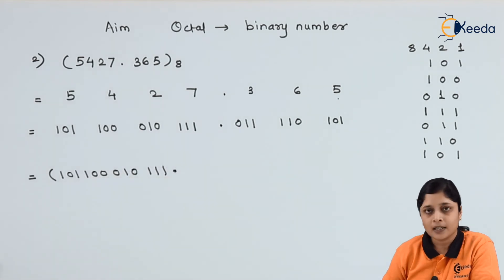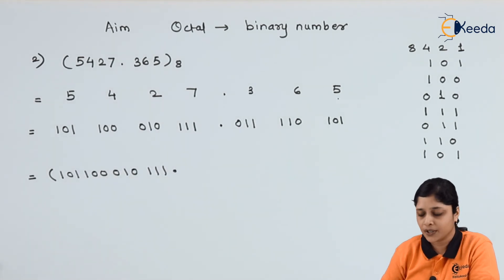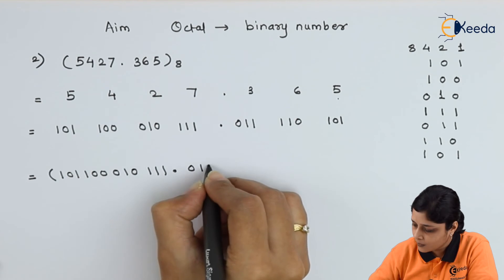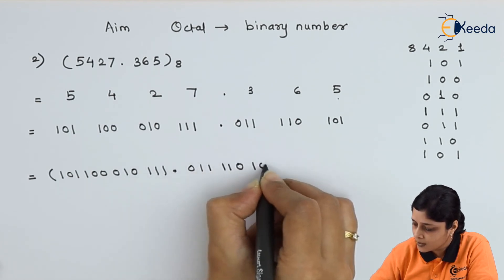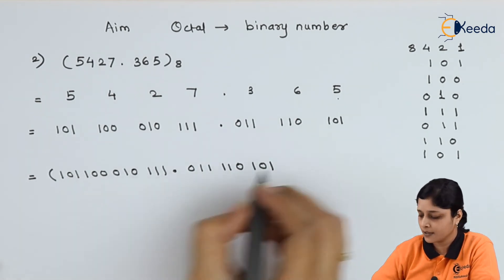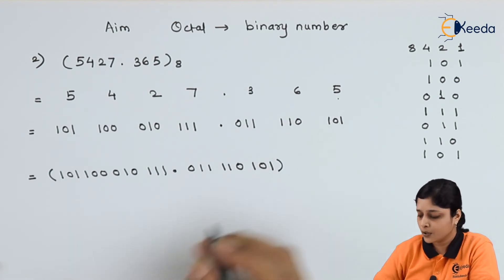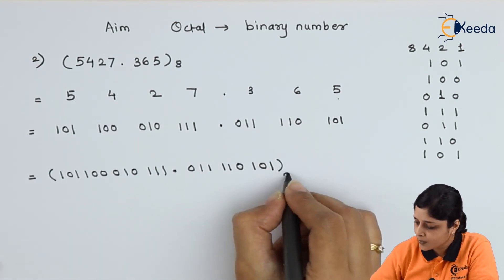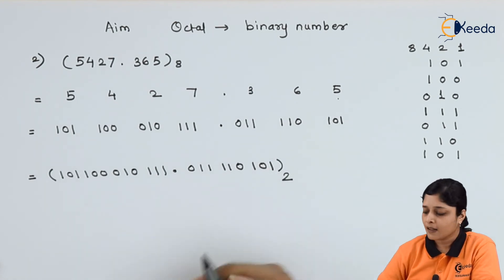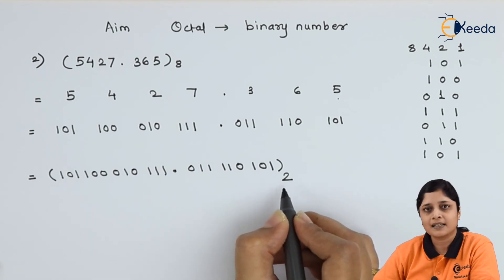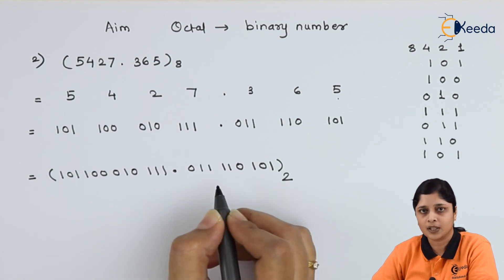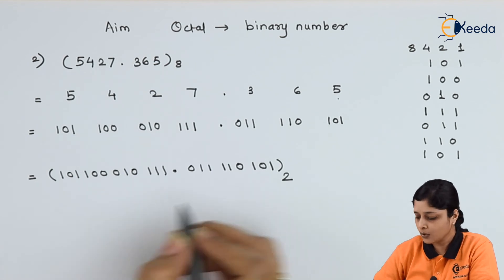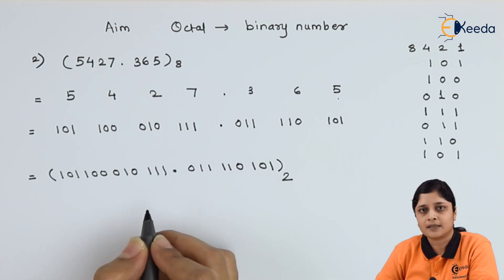The final answer is: 1 0 1 1 0 0 0 1 0 1 1 1 decimal point 0 1 1 1 1 0 1 0 1 to the base 2. Don't forget to mention the base — base 2 means this answer is in binary, and it consists of 0 and 1 only. This is your final answer.